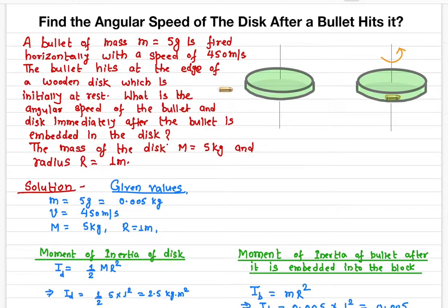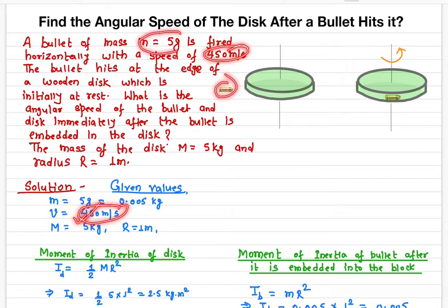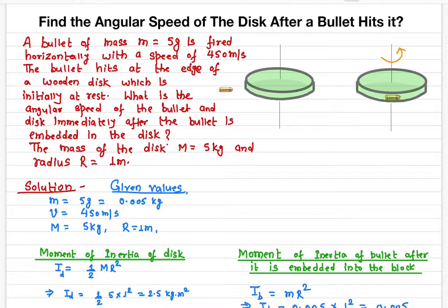In this video, I'll talk about finding the angular speed of a disk after a bullet hits its edge. The bullet is fired with a velocity of 450 meters per second. The mass of the bullet is 5 grams, and it hits at the edge of the disk. Once it hits, it is embedded into the wooden block, so the bullet is now embedded. All the linear motion is then translated into rotational motion.